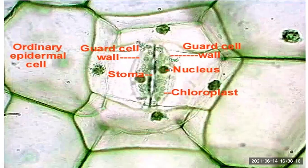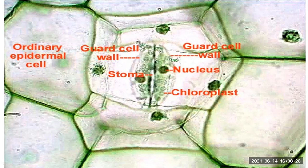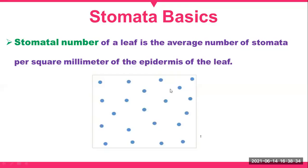Chloroplast and nucleus are also present, but our topic of interest is stomata only. The green colored guard cells are visible, and above them the white colored cells are epidermal cells.